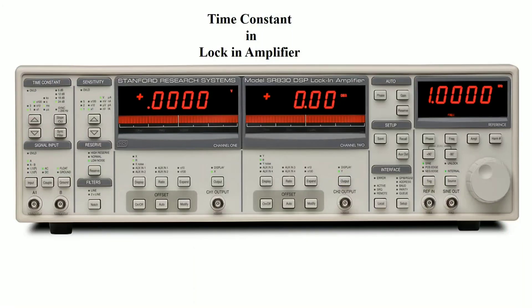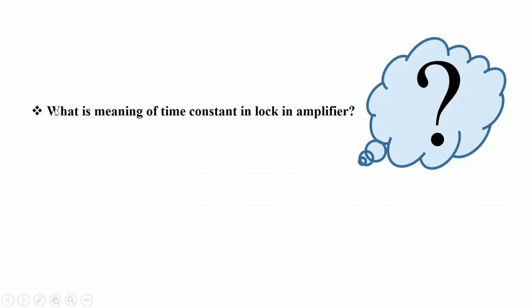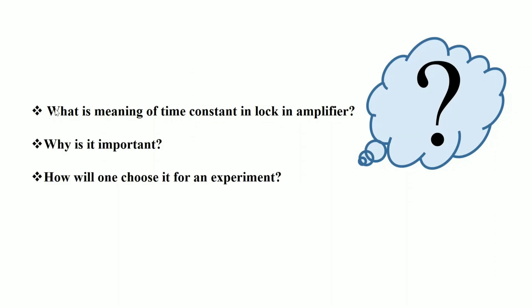Hello friends. In the previous video we discussed the basic principle of the lock-in amplifier. In this video we will be discussing the time constant in the lock-in amplifier. This is the front side of the lock-in amplifier SR830, which has a panel called time constant with a few buttons to change its value. The question is: what is the meaning of the time constant, why is it important, and how will one choose it for an experiment?